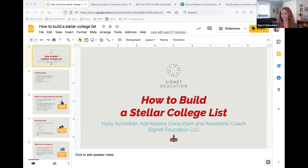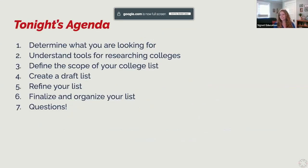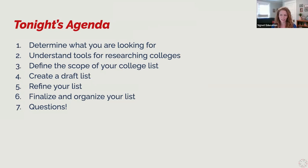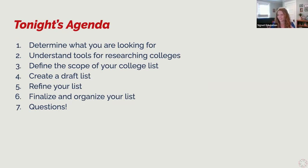The best way to ensure the process is as smooth and solid as possible is to make sure the list reflects a good fit. We'll walk you through this via the various steps: determine what you're looking for, understand the tools available, open your college list, create a draft list, refine your list, and finalize and organize it. We won't get all of these done in this session, but I'll tell you how to do them, and we should have plenty of time for your questions.